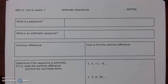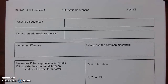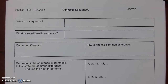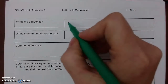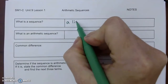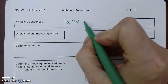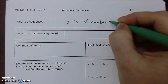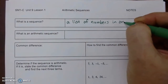Welcome to unit 9 lesson 1: arithmetic sequences. My definitions are not going to be textbook definitions — these are user-friendly words that you understand. A sequence is just a list or a set of numbers in an order or a pattern.